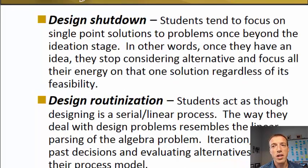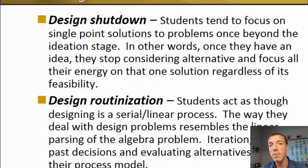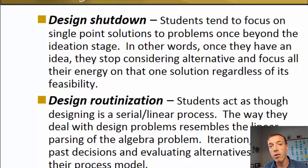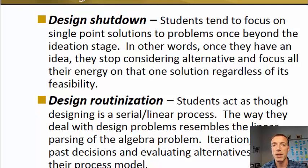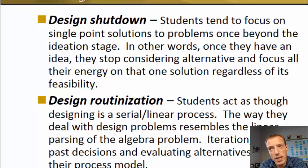The next is design shutdown, and this is where you essentially pick one solution — often the very first solution you think of — and you just head straight down that path as fast as you can. Maybe you've done two or three semesters of that and found out that solution didn't work, and you should have figured it out sooner. If you would diverge your solution space during the conceptual design phase, really think of a lot of different solutions, and then put some thoughtful time into picking the best one.